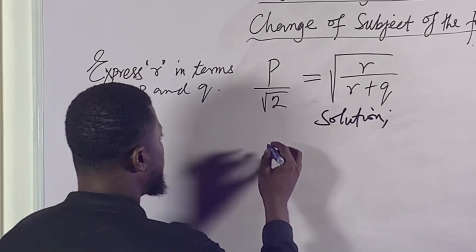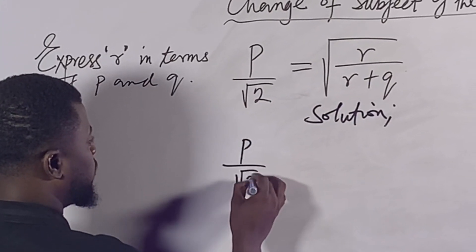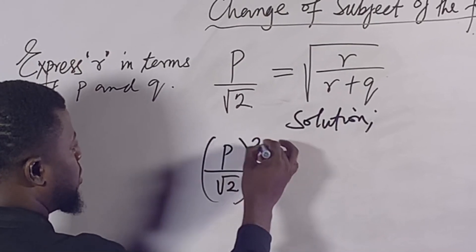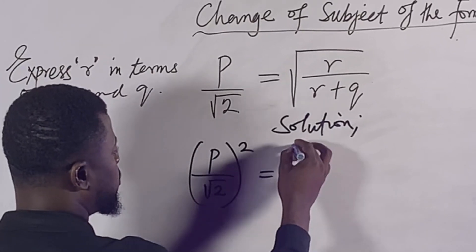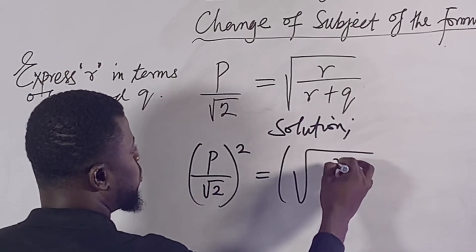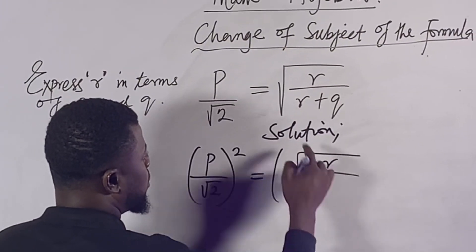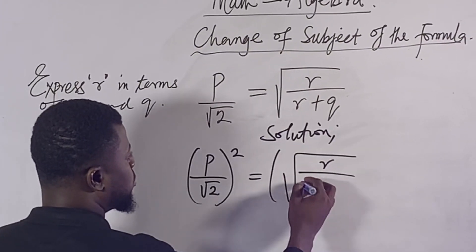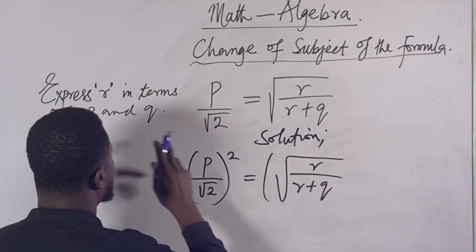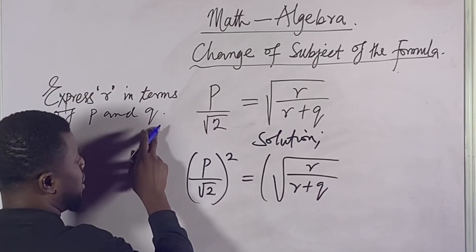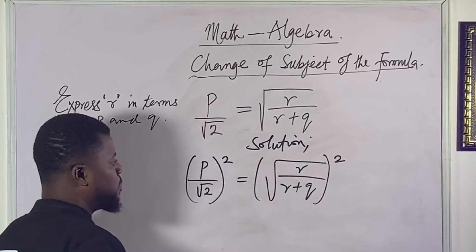The only way we can do that is to take the square of both sides of the equation. So here we have p over the square root of 2, all squared. We are doing this because we want to eliminate the square root and then look for this arrow that we are supposed to express in terms of p and q.